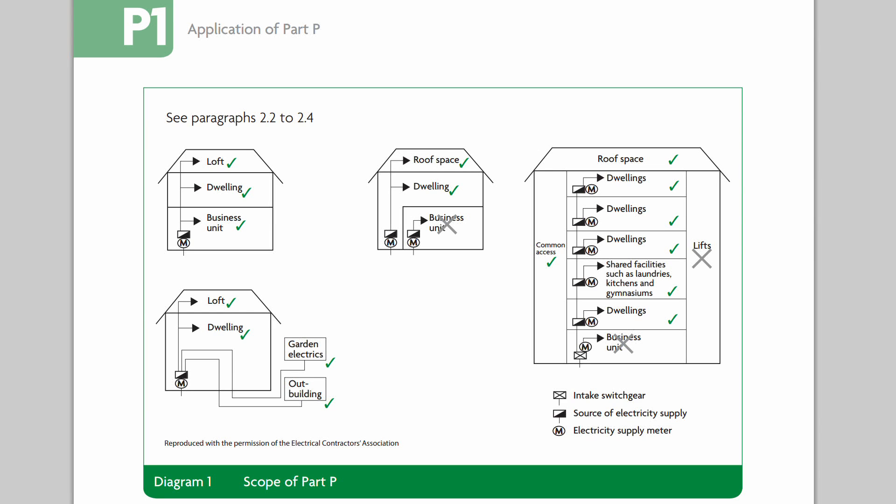Part P applies to all electrical work in dwellings — houses, bungalows, flats and the like. The approved document includes a diagram showing examples of where Part P applies, covering pretty much all parts of a house or living area, including common parts and shared staircases. The only things it doesn't apply to are business units, offices, and factories — it's purely associated with dwellings. It covers all electrical items, from simply replacing a light switch to fully rewiring the entire building.